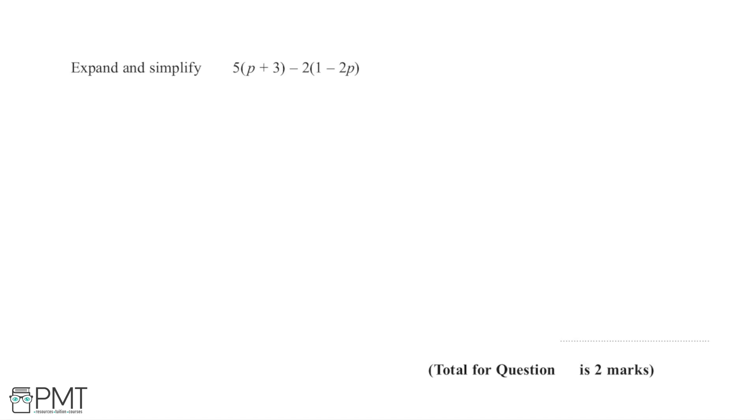In this question, I'm asked to expand and simplify this expression: 5 lots of p plus 3 minus 2 lots of 1 minus 2p. I'm going to need to expand out the brackets so that I can simplify my terms, group terms together, and come to a final answer.